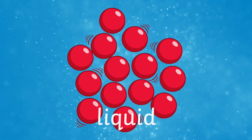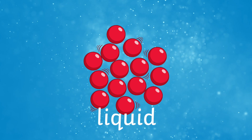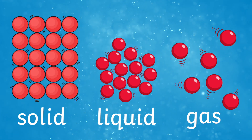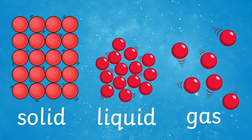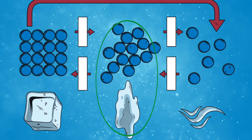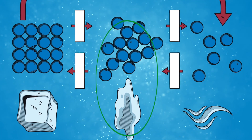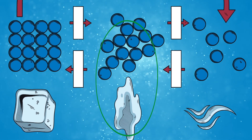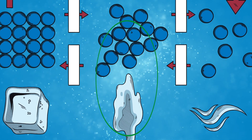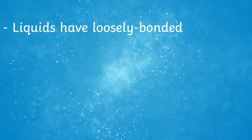A liquid is one of three states of matter we categorise materials into. The others are solid and gas. A liquid is a substance where the particles are still close together, but not as tightly bonded or in a fixed structure like a solid. This means that they can slide past each other.